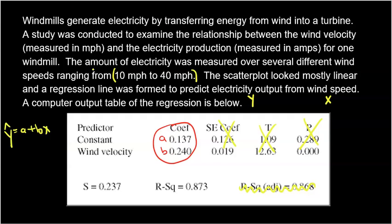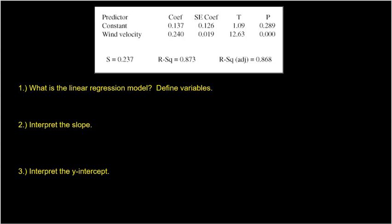So all we have to do is write the equation: Y-hat equals 0.137 plus 0.24 times X. A and then B in the table, alphabetical order. Oftentimes you will be asked to define the variables — the variables are X and Y-hat. The 0.137 and the 0.24 are coefficients — those are the slope and the Y-intercept. They are not variables.